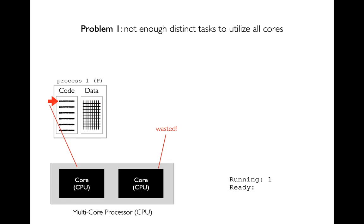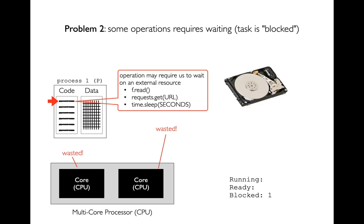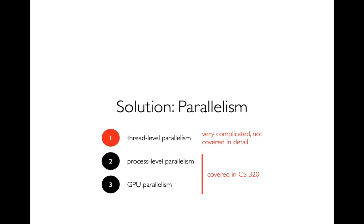So the two problems are: problem one — maybe I have more cores than I have work; problem two — maybe I have lots of processes and threads but they're waiting. Either way I end up wasting resources. The solution is parallelism — we want to write our programs so they consist of independent parts that can be worked on at the same time. There are three important ways to do that: thread level parallelism, process level parallelism, and GPU parallelism.